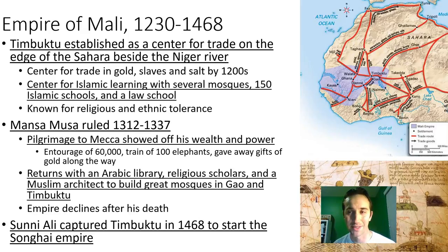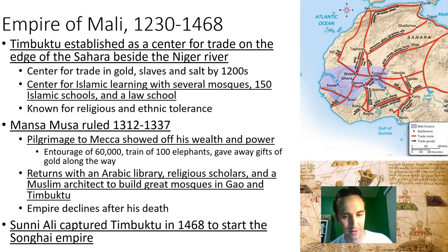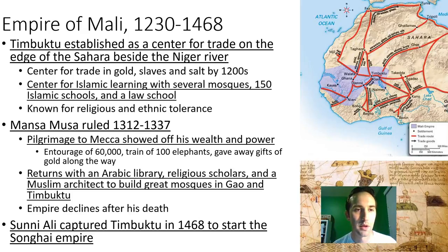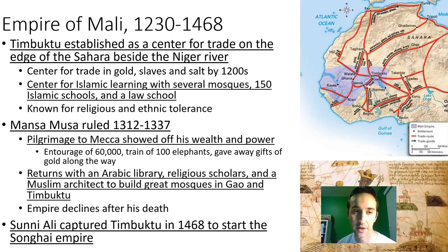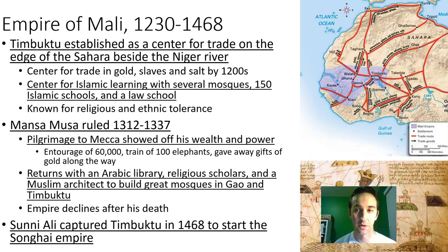Timbuktu became the center of the trans-Saharan trade — right on the edge of the Sahara, next to the Niger River, the first place where you're out of the desert and can get food after a long while. It became a center for trade in gold from the Wangara region, as well as slaves and salt by the 1200s. It also became a center for Islamic learning, with several mosques, 150 Islamic schools, and a law school, all built in Timbuktu on the edge of the empire.